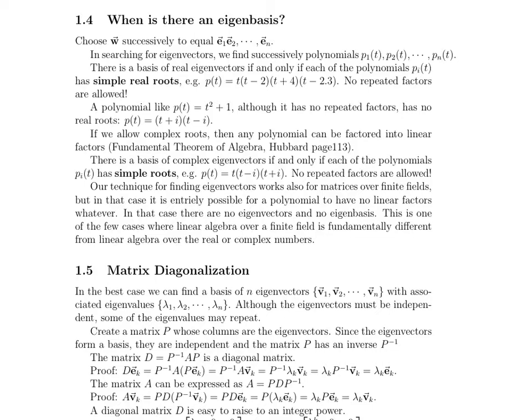So let's talk about this. We choose w successively to equal the first standard basis vector, the second standard basis vector, and so on and so forth, all the way up to the nth standard basis vector. It depends on what the dimension is of your matrix. And so in the search for finding these eigenvectors, now that we've chosen these various w's, we find all these different polynomials. And basically, there is a basis of real eigenvectors if and only if each of the polynomials in this list that we've created have, each one has simple real roots, something that looks like this. There are no repeated factors and all the roots are real numbers. That's a really important statement to know.